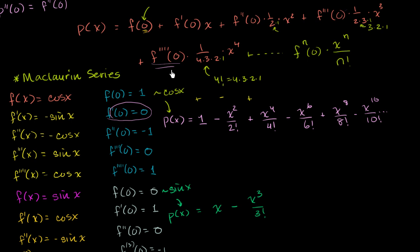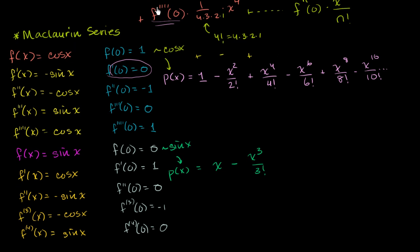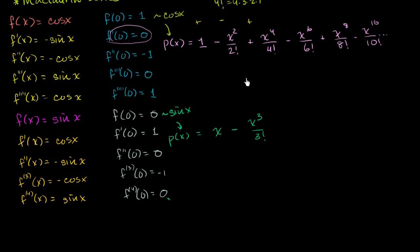And then the next term is going to be 0, because that's the fourth derivative. The fourth derivative evaluated at 0 is the next coefficient. We see that that is going to be 0, so it's going to drop off. And what you're going to see here, and actually maybe I haven't done enough terms for you to feel good about this. Let me do one more term right over here, just so it becomes clear.